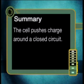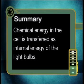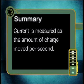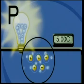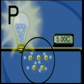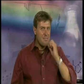I want you to write down a summary of what you have learnt from this experiment and these animations. The cell pushes charge around a closed circuit. Chemical energy in the cell is transferred as internal energy of the light bulbs. Current is measured as the amount of charge moved per second. Electrons transfer electrical energy to the components of this circuit. The flow of charge transfers energy to the working parts of the circuit — it acts as an agent in transferring chemical potential energy from the battery to the internal energy of the components. That is the function of electric current.